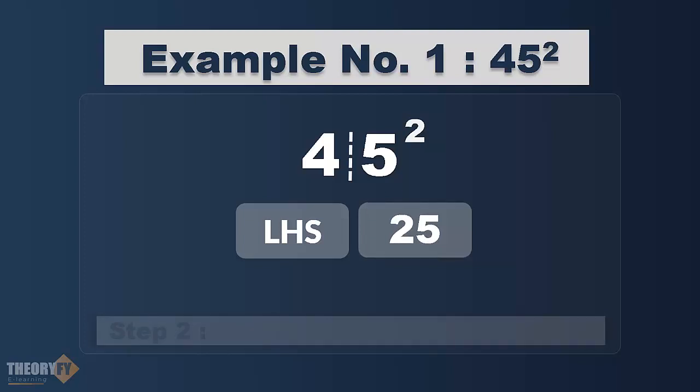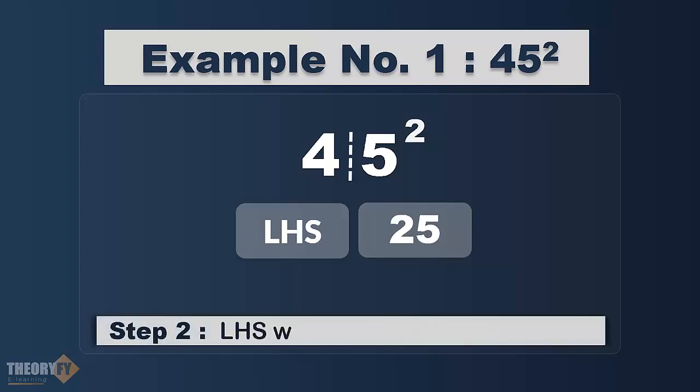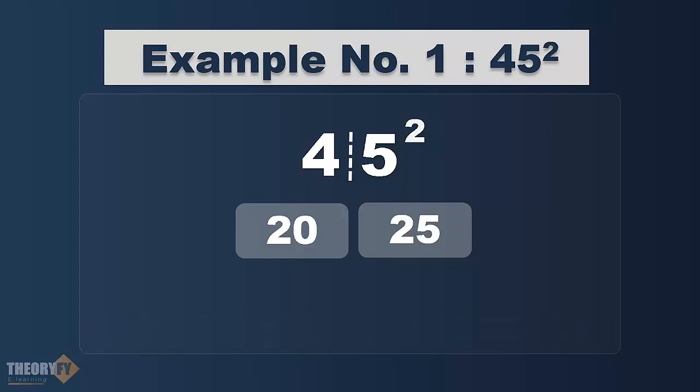Now we have to solve the LHS. The left part — just multiply it with its next number. So here in this case, that left part is 4, and 4's next number is 5. When you multiply them you get 20, and our final answer is 2025.